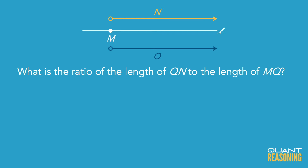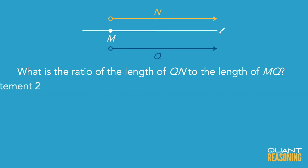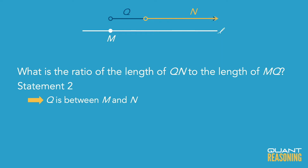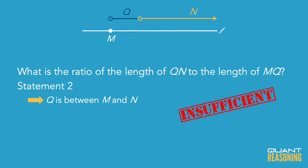We should probably start with Statement 2 — it seems a little bit easier to evaluate. Statement 2 just tells us that q sits somewhere in between m and n. So now we do know the relative order of these three tick marks on the number line, but we don't have any information about the ratio of the segments. So Statement 2 is not sufficient on its own, and we should eliminate the answer choices that claim it is. B and D are gone, and we're down to A, C, E.